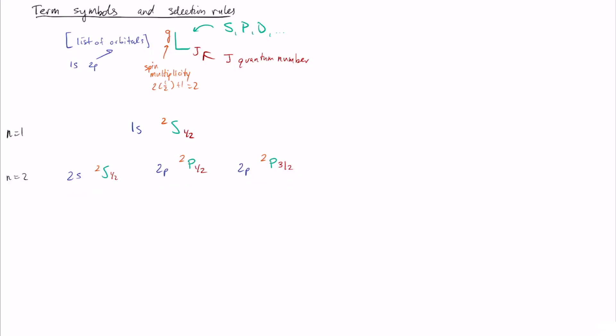If you look at all the possible transitions from n equals two to n equals one, that might imply you'd expect to see three different lines: one corresponding to 2s one-half to 1s one-half, another corresponding to 2p one-half to 1s one-half, and a third corresponding to 2p three-halves down to 1s one-half. But remember, we established that this transition from n equals two down to n equals one is actually a doublet — two closely coupled lines, not three. So to figure out which lines we will actually see, we need to know what the selection rules are.